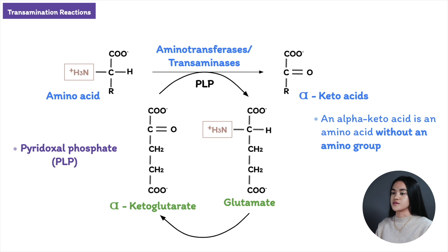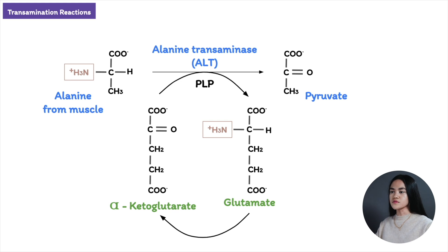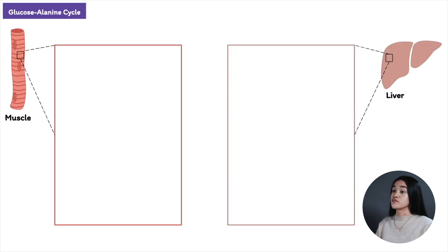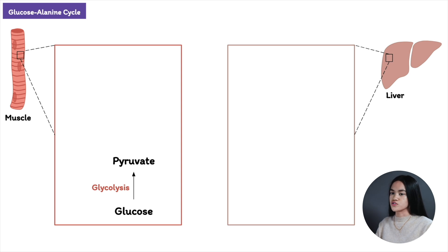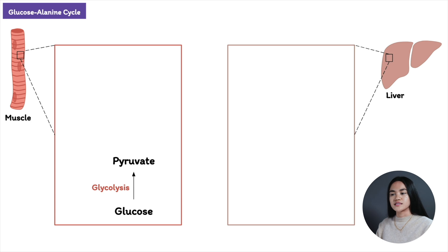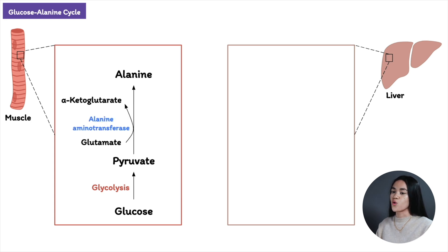There are different types of transaminases, named depending on the amino group donor. As an example, let's use alanine from muscles. Alanine can transport amino groups to the liver via the glucose-alanine cycle. During muscle contraction, glycolysis occurs, converting glucose to pyruvate, so pyruvate levels are high in muscles. Since amino acids are used as fuel and glutamate accepts amino groups, glutamate transfers its amino group to pyruvate in muscle, producing alanine, catalyzed by alanine aminotransferase.